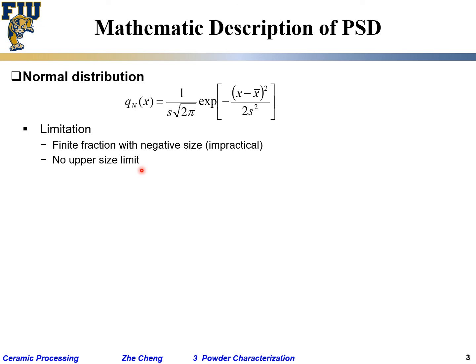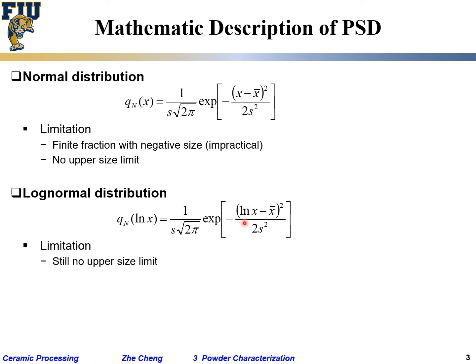Log-normal distribution is similar, except inside you have the natural log of x. Similarly, no upper size limit, but at least now everything is positive. And there are other empirical distributions as well.